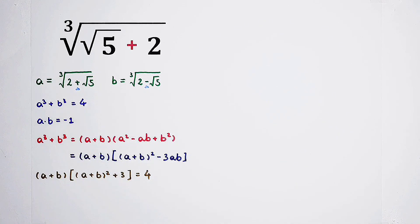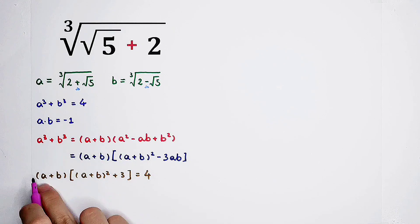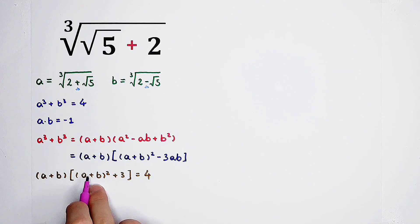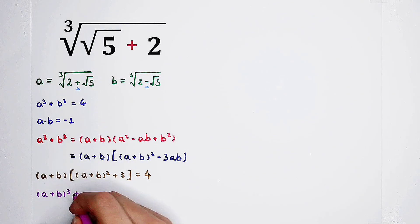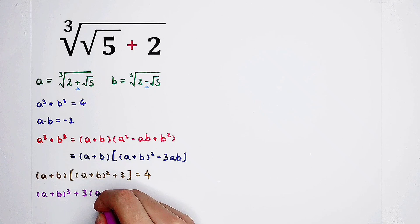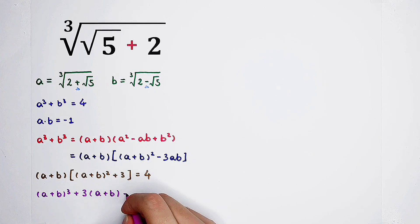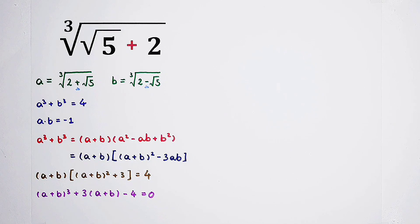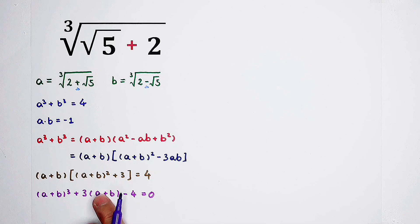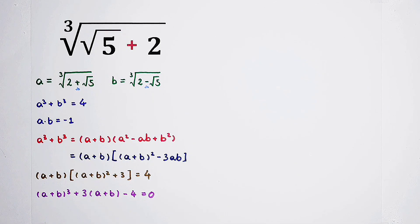So actually, a plus b then times a plus b squared. It is a plus b cubed. And then plus 3 times a plus b. Minus 4 is 0. So then, we can regard this equation as an equation about a plus b. So now, we can substitute again. If you want to substitute, substitute. If you don't want to substitute, don't substitute.